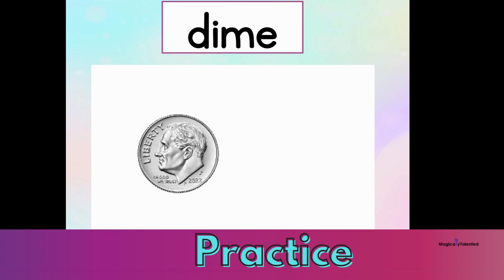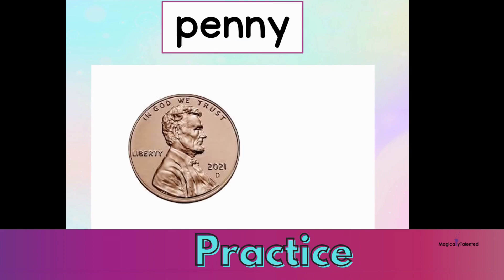Let's take a look at our tools for counting. This is a dime. It is worth ten — dimes are worth ten cents. This is a penny. It is worth one — pennies are worth one cent. We will use dimes and pennies to count on a place value chart.